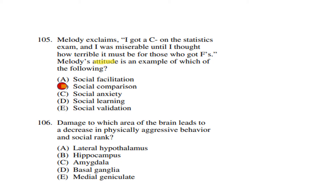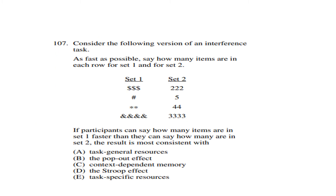Question 106: Damage to which area of the brain leads to a decrease in physical aggressive behavior? The mentioned statement is about decrease in physical aggressive behavior and social rank. The right answer is the amygdala, as the amygdala deals with aggressive behavior — damage to the amygdala leads to a lack of physical aggressive behavior.